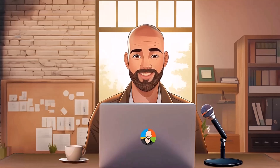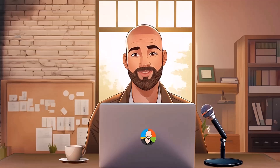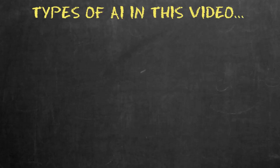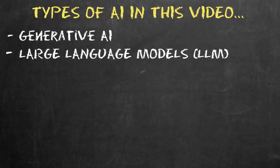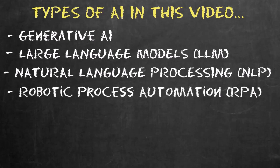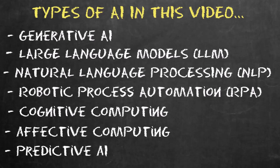Because your time is valuable, let's list out the types of AI we'll discuss up front, and you can either learn all about them or jump to a specific topic using the timestamps below. The types of AI we'll cover in this video are generative AI, large language models or LLMs, natural language processing or NLPs, robotic process automations or RPAs, cognitive computing, affective computing, and predictive AI.